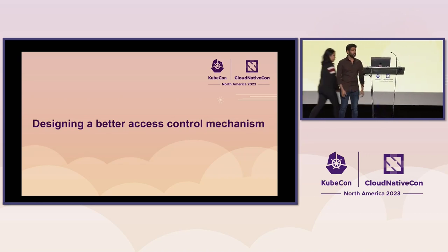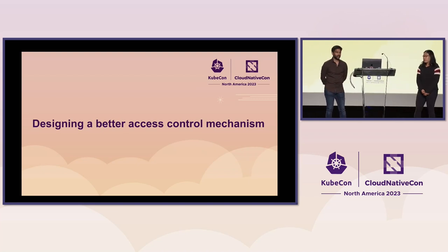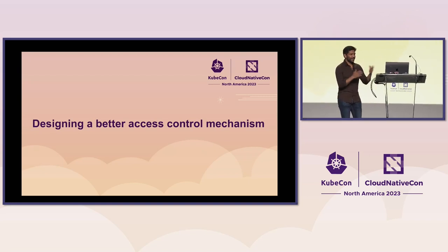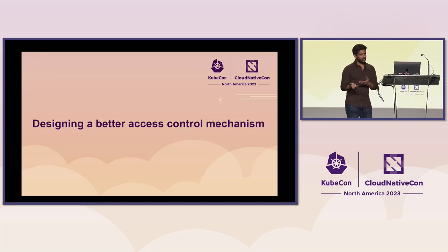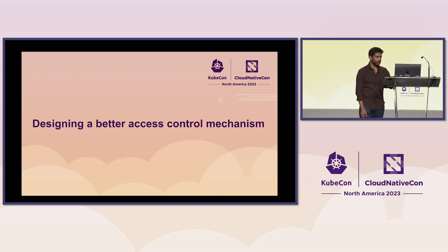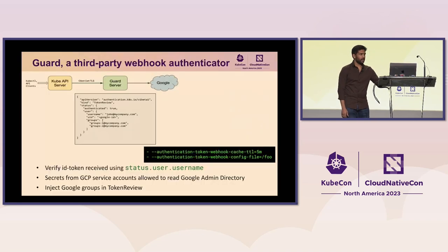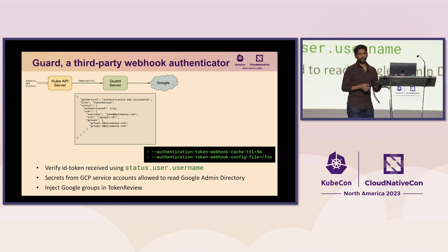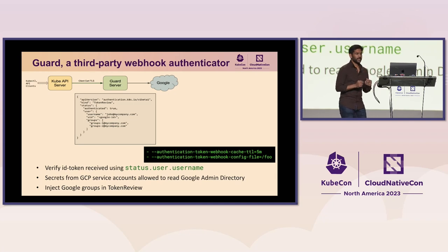So far we looked at how we leveraged RBAC to grant permissions to people. Now I'll talk about how we designed a better access control mechanism. When we bootstrapped our clusters, we used Guard, a third-party webhook authenticator. The data flow has users making kubectl requests passing their ID token as a bearer token to the API server. The API server uses the webhook configuration — passed as flags in the API server configuration — and reaches out to the webhook authenticator, forwarding the ID token.